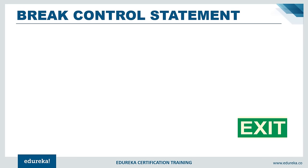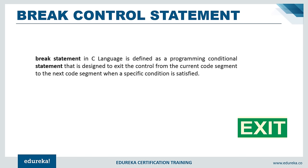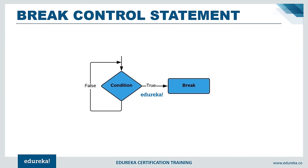The break control statement is designed to exit the control from the current code segment to the next when a specified condition is satisfied. In switch statements, each case includes a break — when a case is matched, the break causes the control to exit the switch and execute the next statements. In the flowchart: if condition is true, the loop breaks; else the condition is repeated.